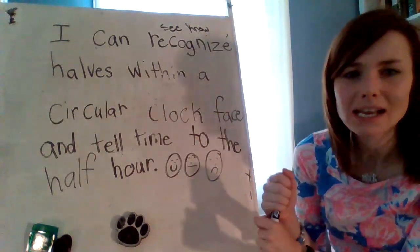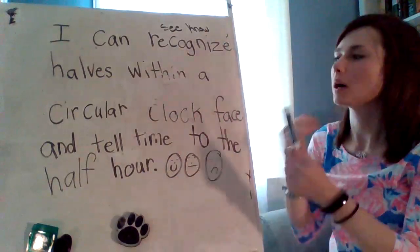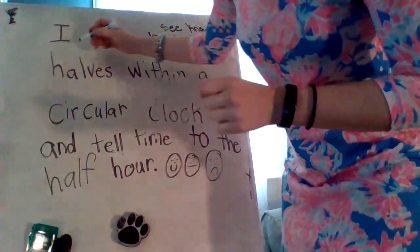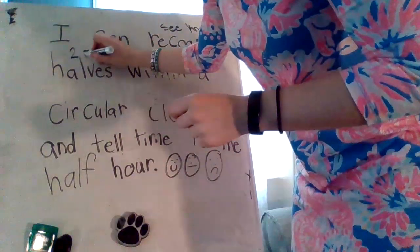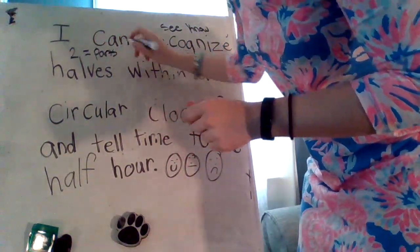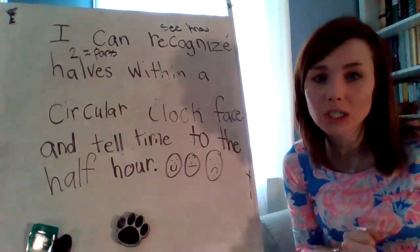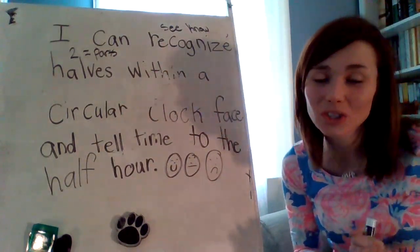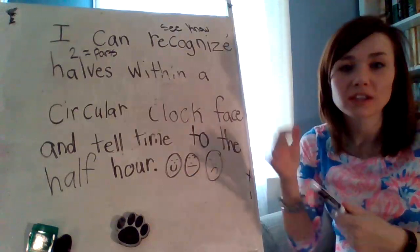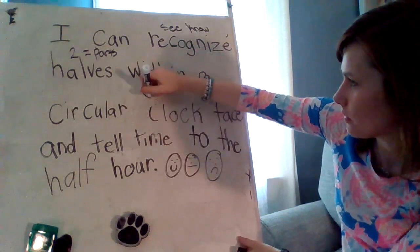Halves. And a half is when we split something into two equal parts — within a circular clock face. So we're going to look at the front of our circular clock.